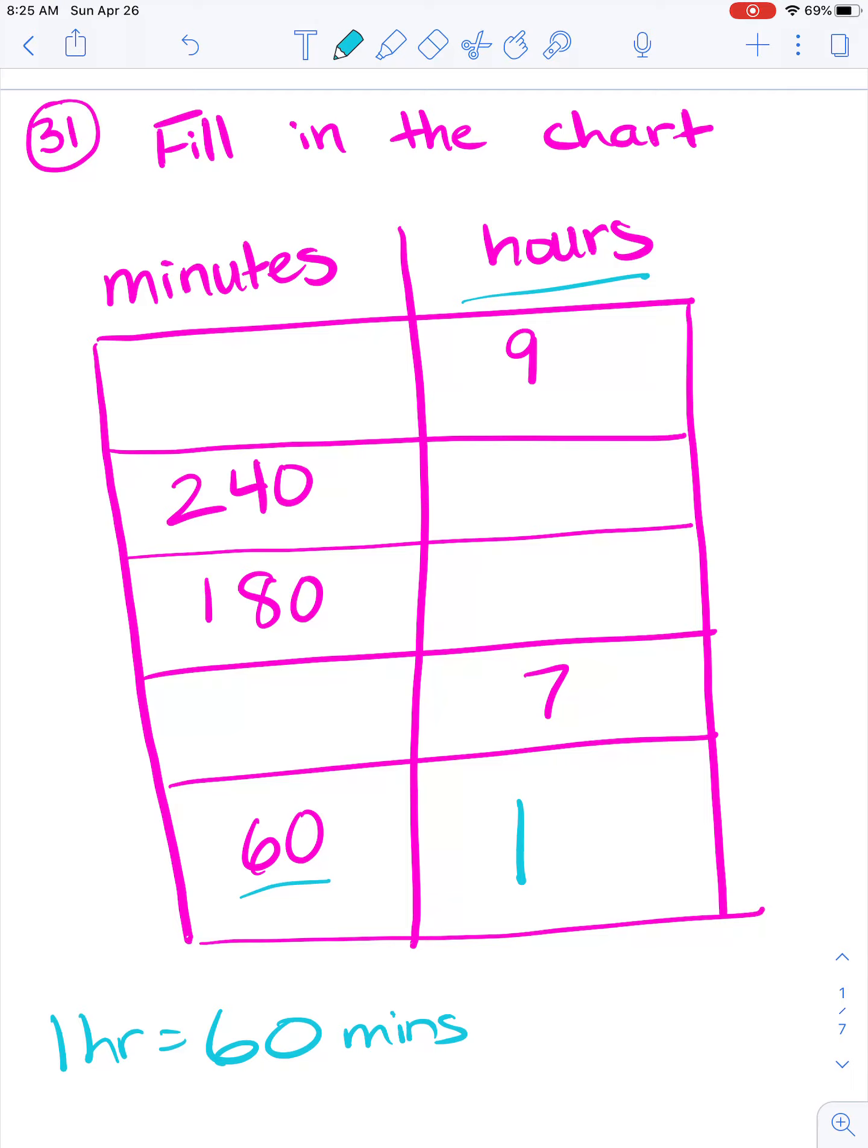So remember the trick I taught you? If I did one hour, two hours, three hours, four hours, five hours, six hours, seven hours, eight hours, nine hours, and we counted by sixes. Remember how we went 6, 12, 18.